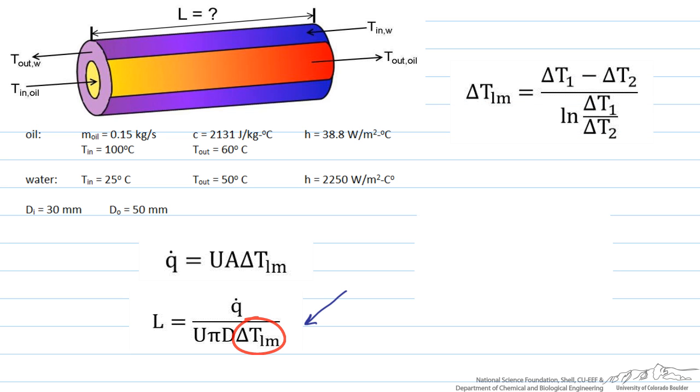Delta T log mean is going to be our delta T1, which refers to the difference in temperature at the entrance of the heat exchanger, minus our delta T2, which is the delta T at the end of the heat exchanger, divided by the natural log of delta T1 over delta T2.